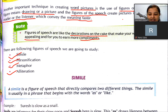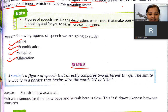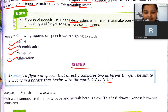First hai aapka simile. Simile kya hota hai? A simile is a figure of speech that directly compares two different things. Simile jise hum Hindi mein upma alankar kehte hain. The simile is usually in a phrase that begins with the words 'as' or 'like'. Simile mein jab hum kisi sentence mein two different things ko aapas mein compare karte hain, to usme hum do words ka use kar sakte hain — ya to 'as' ya 'like'.